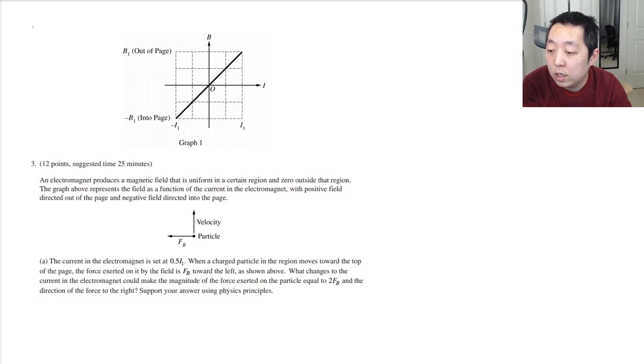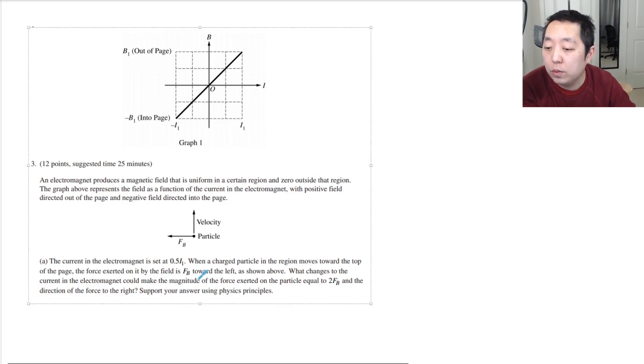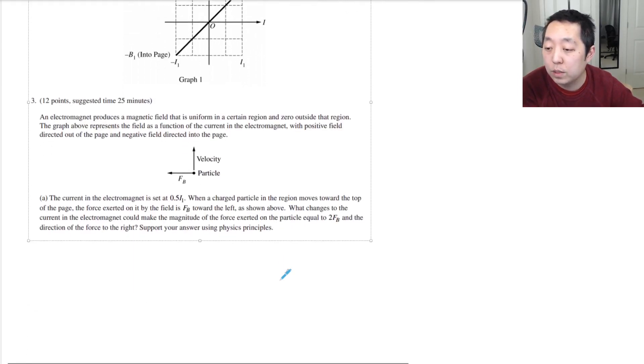The current in the electromagnet is set at 0.5 I1. When a charged particle in the region moves towards the top of the page, the force exerted on it is towards the left as shown. What changes to the current could make the magnitude of the force equal to 2Fb in the direction of the force to the right? Support your answers using physics principles.